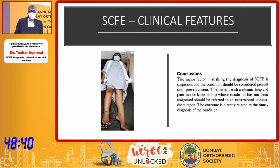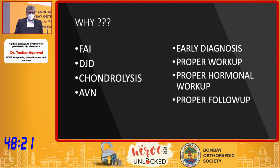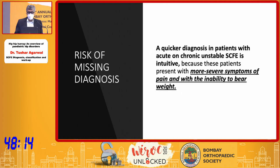The next set of patients will be wheeled in and they will be non-ambulatory — these are easier to pick up. However, we must always maintain a very high index of suspicion in all patients with hip pain and chronic limb. It is very important to diagnose early because the outcome is dependent on early diagnosis. All the complications — FAI, degenerative joint disease, chondrolysis, and AVN — increase if early diagnosis is not made.